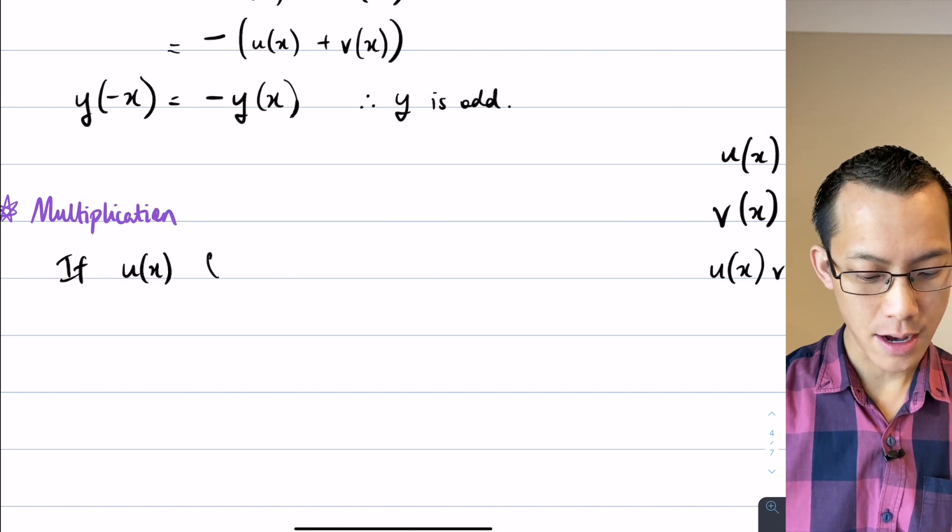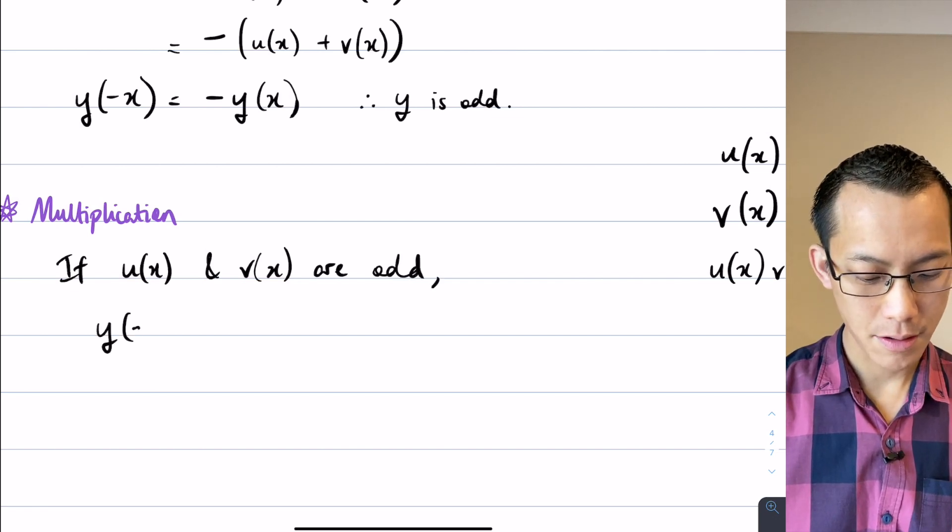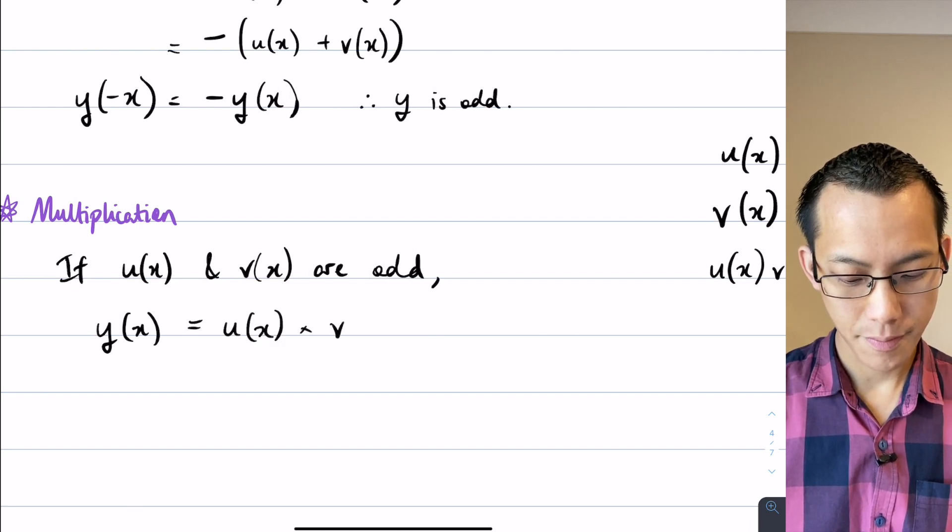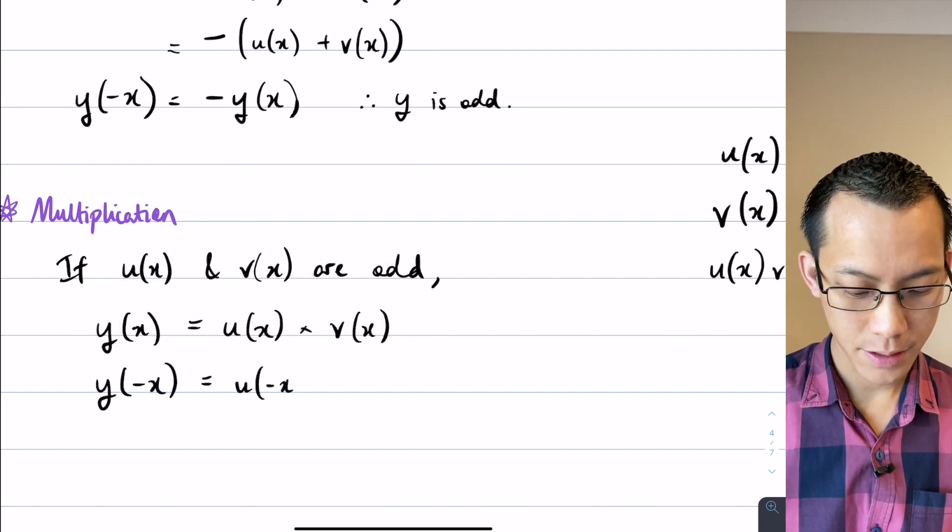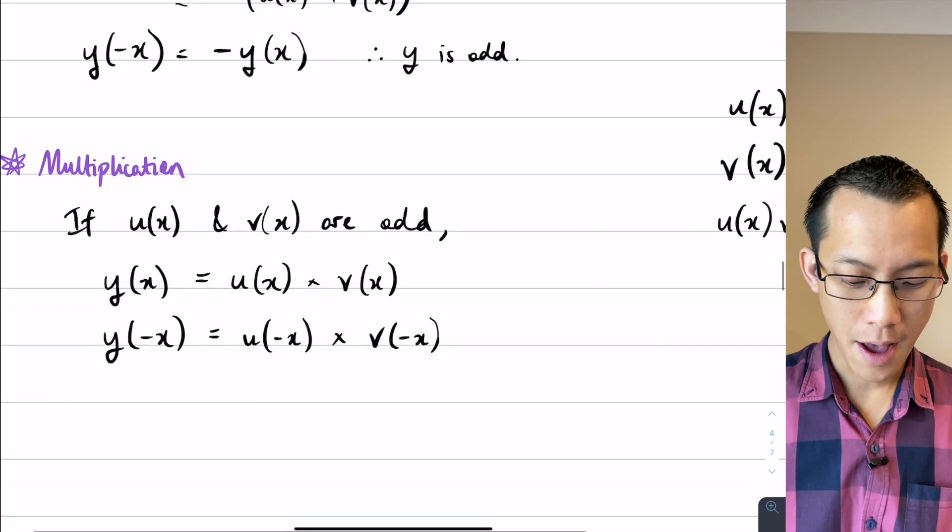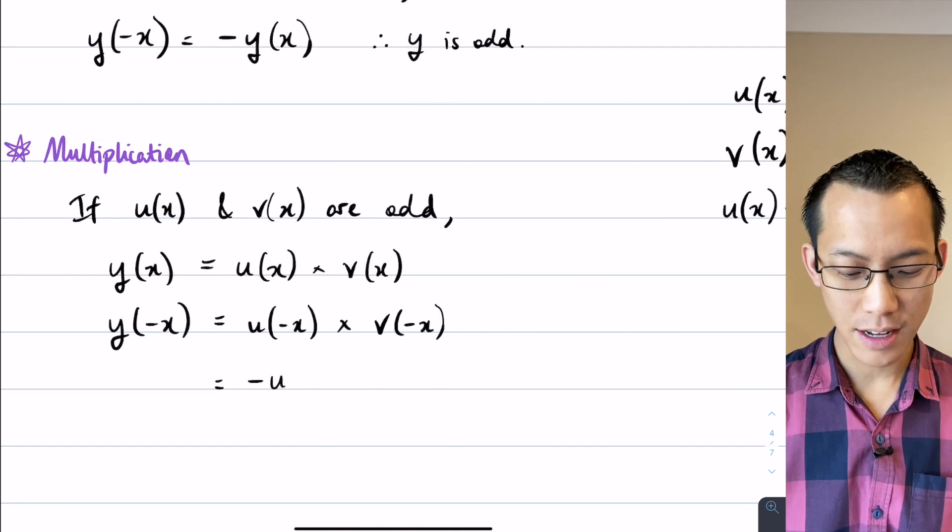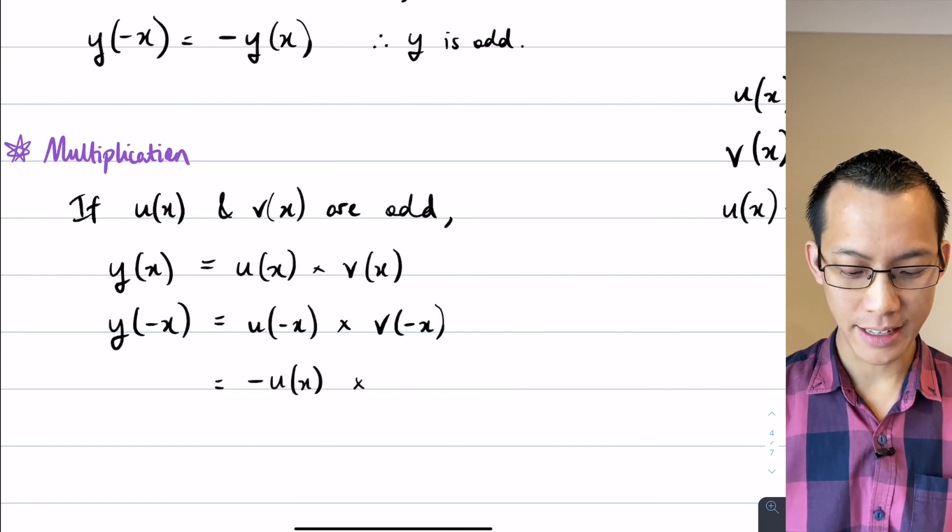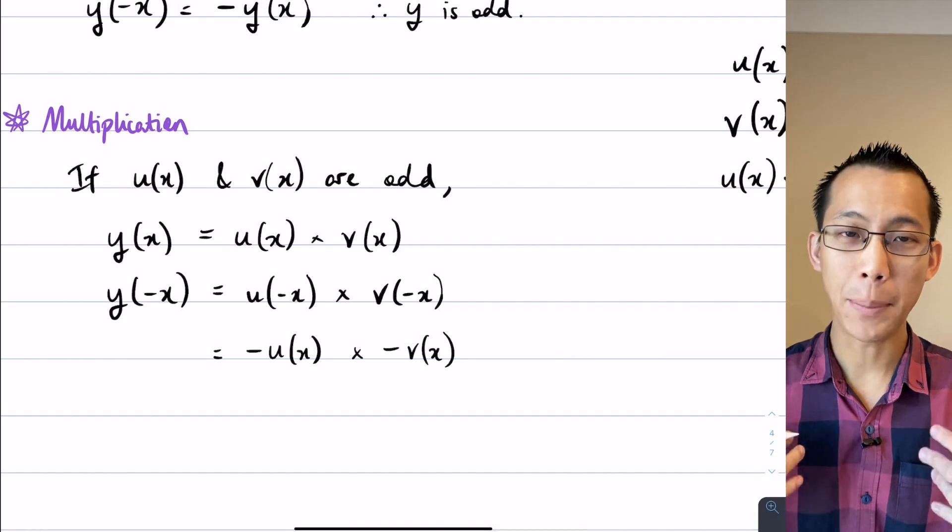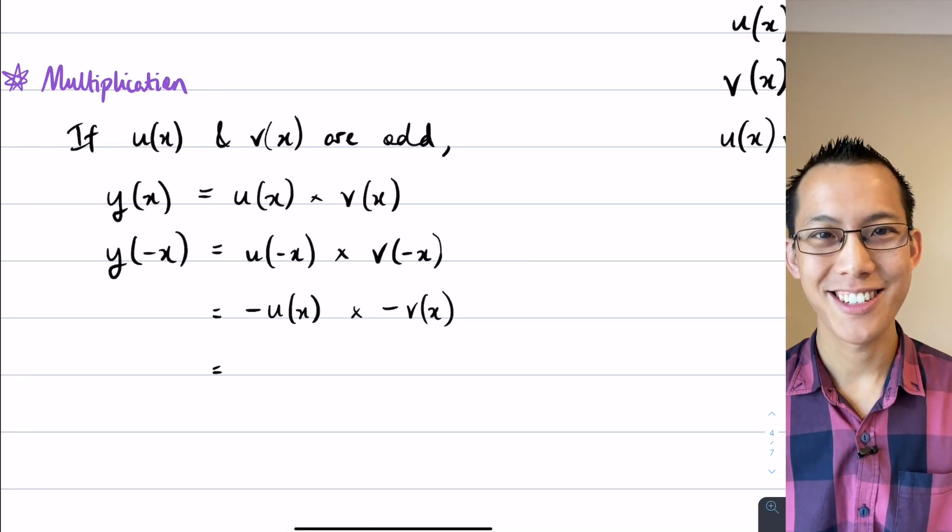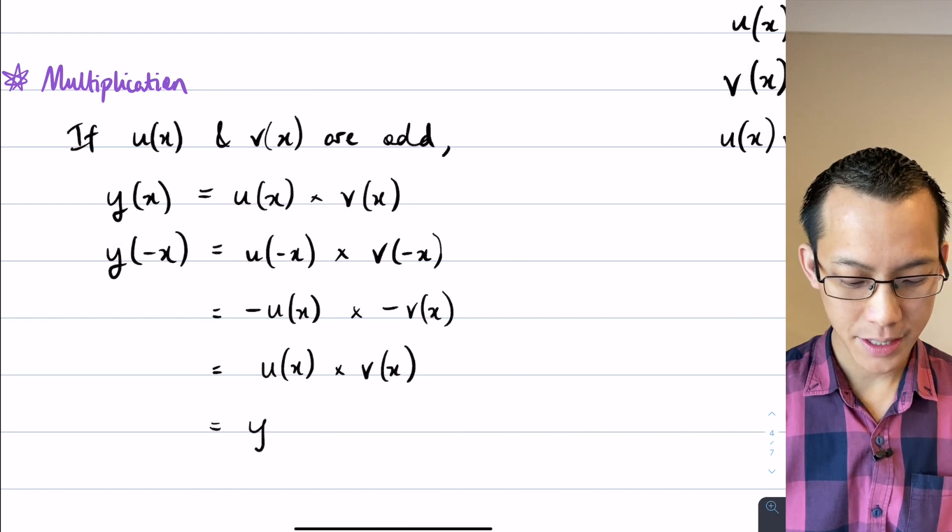If u and v are odd and then when I do this y of x, which is the product of those, what happens when I put in negative x? Let's see what happens. This is u of negative x times v of negative x, that's just the straight substitution, but then I'm going to identify just like I did earlier. If these two are odd, I can substitute u of negative x for negative u of x. And in the same way I can swap this v of negative x for negative v of x. So I've done this substitution because the functions are odd. But what's going on here? The two negatives are going to cancel. So you can see I just get u of x times v of x. And that's the y of x that I started with.